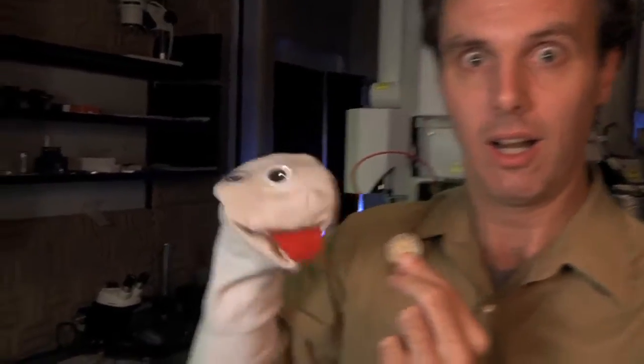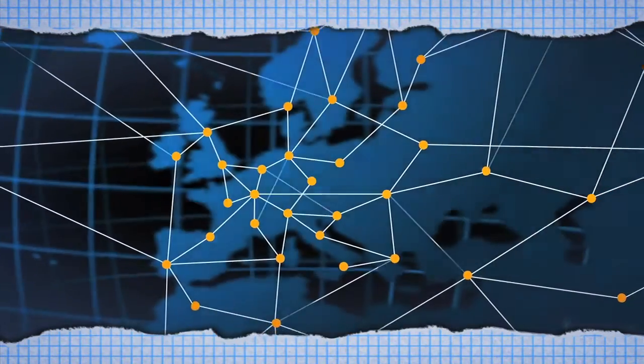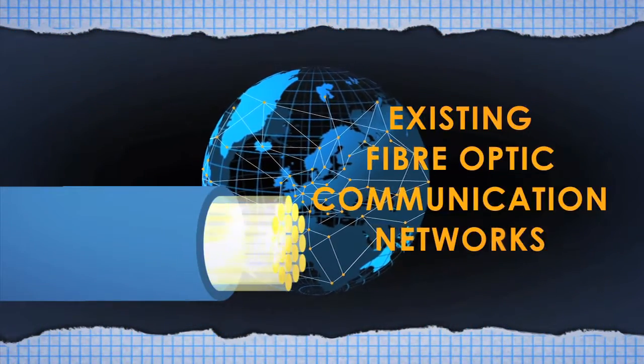But imagine taking that point A to point B setup and turning it into a more complex network. This network could be grown to a trans and eventually intercontinental scale. And this quantum internet could be interfaced with the existing fiber optic communication networks.